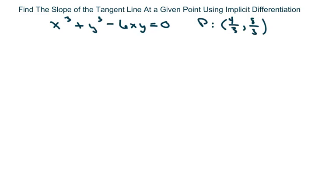Hi everyone, we're going to find the slope of the tangent line at a given point using implicit differentiation. This one's pretty much all set up for you, so we can just take the derivative of all this.